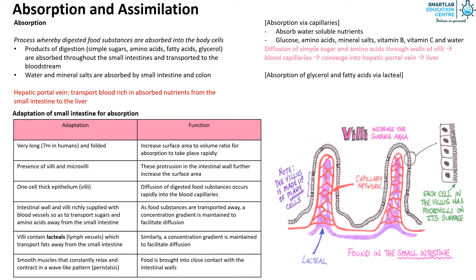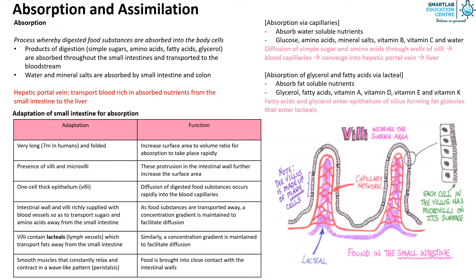At the lacteal, there is absorption of fat-soluble nutrients such as glycerol, fatty acids, vitamin A, vitamin D, vitamin E, and vitamin K. Fatty acids and glycerol enter the epithelium of the villus, forming fat globules that enter the lacteals. Now let's look at assimilation.